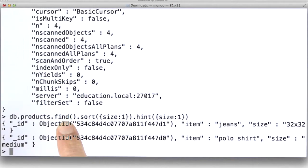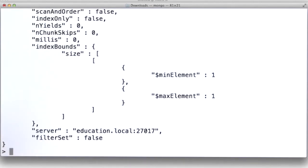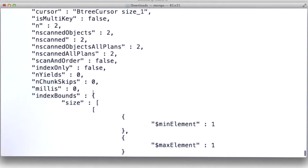We did a find where we would expect all the documents, but we only got two back. The reason we only got two back is that we're using the index size. The index size is sparse. The index on size is missing the two documents that don't have sizes, and so they're not included when it's returned. If you call explain, you'll see that now it is using this index on size.